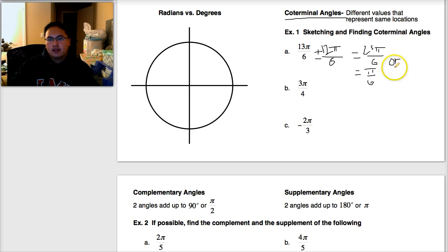Letter B. Trying to find the coterminal angles for 3π over 4. So I'm going to add and subtract 2π. Again, I can't add or subtract unless I have a common denominator. So I'll multiply top and bottom by 4. So this will become 8, and this becomes 4. If I add them, I get 11π over 4. That can't be reduced. And if I subtract them, I get negative 5π over 4. So those are my coterminal angles.